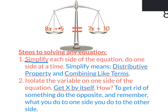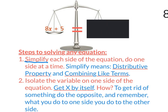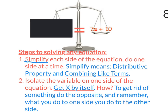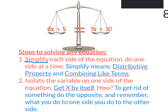Let's look at 8X plus 5 equals 7X plus 10. Left side: is there any distributive property or combining like terms? No — it's already simplified. Right side: 7X plus 10 — no distributive property, no combining like terms. So we move on to step two: isolate the variable. The X is on both sides. We have 8X here and 7X there. We need to get rid of one of them. To get rid of 7X, do the opposite: subtract 7X, and do it to both sides.